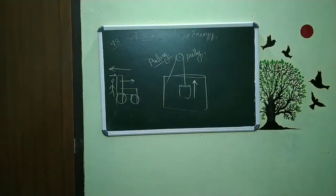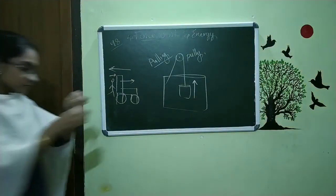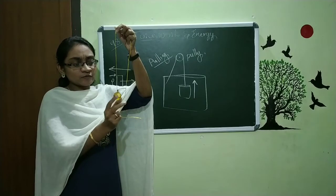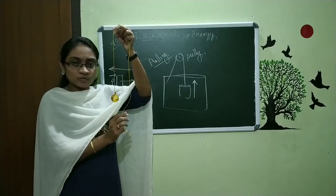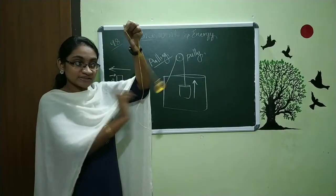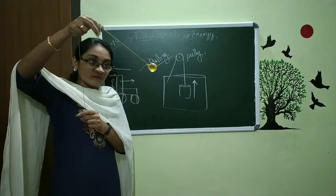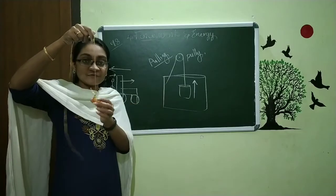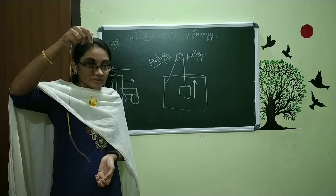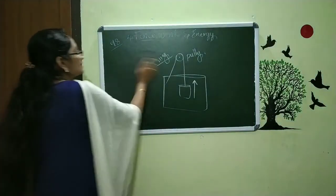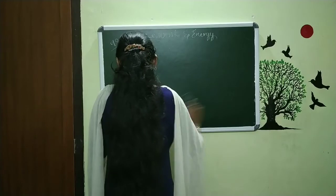Here you can see a simple pendulum. When I am not giving any type of force, it has no motion — it just stays at rest. When I am giving a force, it starts to oscillate, moving from one place to another. When I stop giving force, no motion occurs. So that is another example of force.